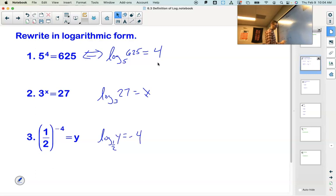1 half. I usually do this triangle thing when I'm writing the base. So 1 half to the negative 4th equals y. That's kind of what's going on in my mind as I'm rewriting this. So that's taking an exponential, rewriting it as a logarithm.